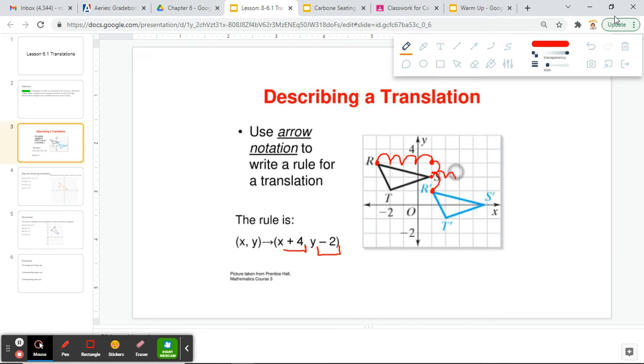This is true for all of our points here. If I take my point S and go 1, 2, 3, 4 to the right and 1, 2 down, I get to my new point S prime. And same with T: 1, 2, 3, 4 and 1, 2, I get to my new T prime.